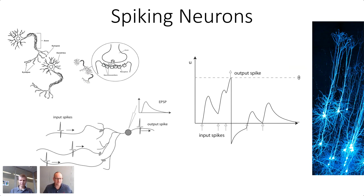Of course everybody knows this: spiking neurons in the brain — most neurons are spiking neurons, rather than the neurons we usually talk about in machine learning. Spiking neurons are a lot more complicated and elaborate than artificial neurons. They are comprised of cell bodies, dendrites that receive input, axons that transmit pulses to the next neuron. It doesn't just connect — there's a synapse between the axon and the next dendrite. When a spike arrives, the axon releases vesicles with neurotransmitters that cross the synaptic cleft and influence the somatic state of the next neuron.